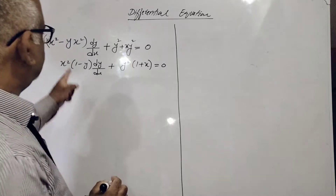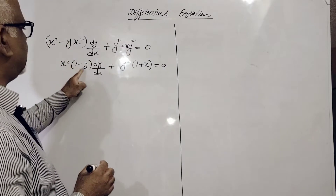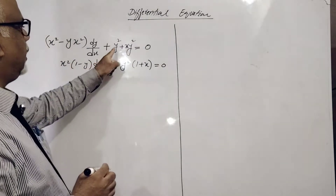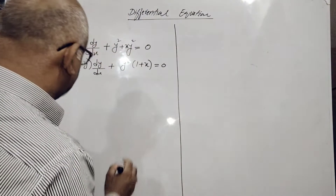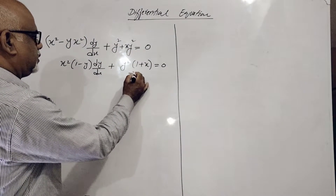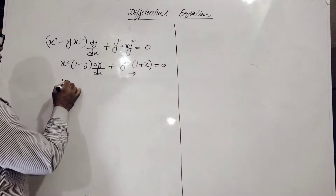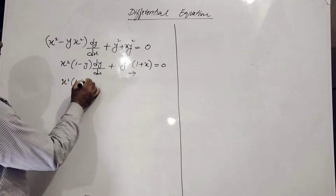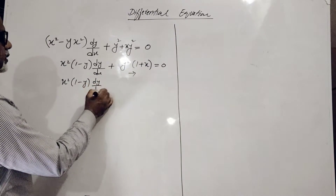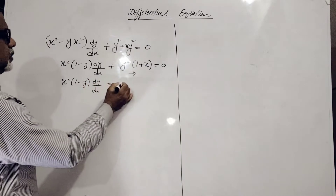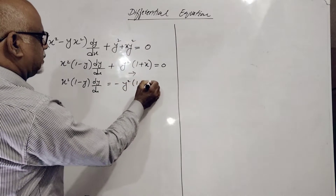Remember that we have to take out x squared common, that is (1 minus y), and y squared common, that is (1 plus x). We have to shift this one to the next side. So: x squared times (1 minus y), dy upon dx equals y squared times (1 plus x).